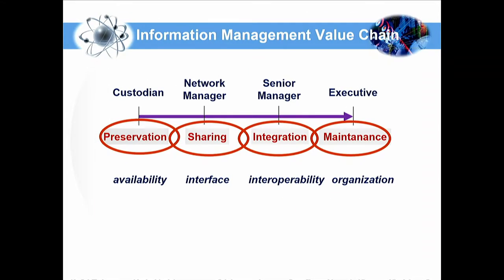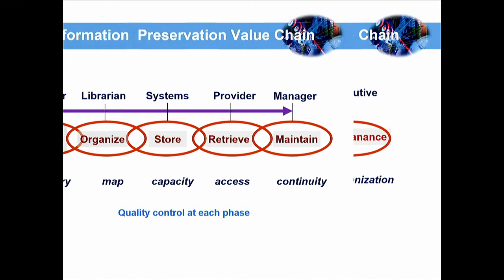The information management value chain includes preservation, sharing, integration, and maintenance. First of all, preserve and make information available. After that, share it — it should be available for all people, at least within the organization. It should be integrated with other information resources, within or even outside the organization. And maintenance is quite important. I will give you an example of a big organization that failed because they forgot about maintenance of information.